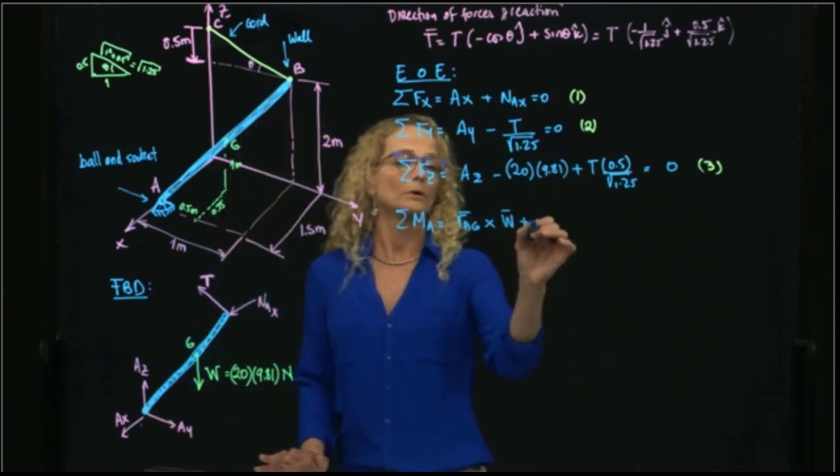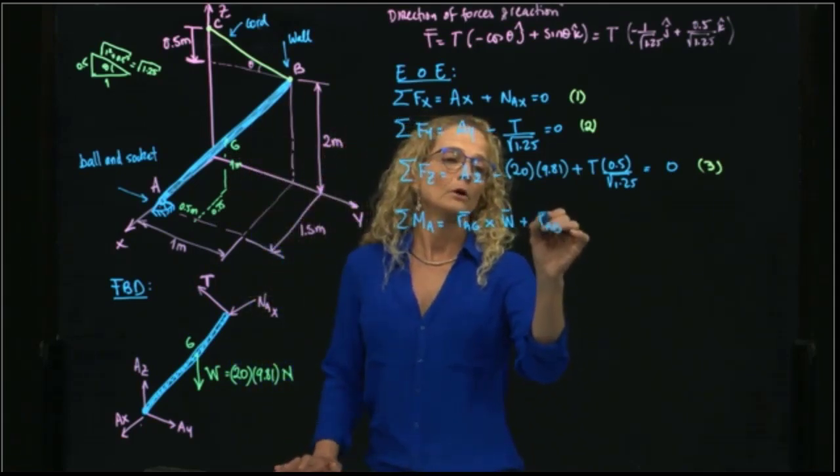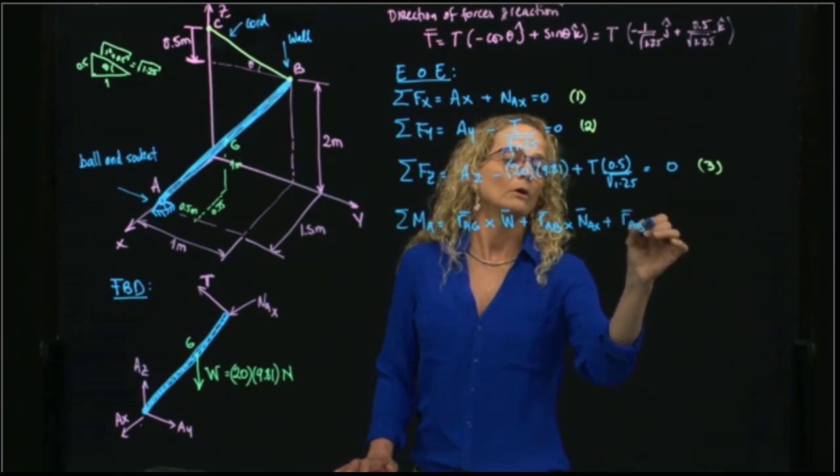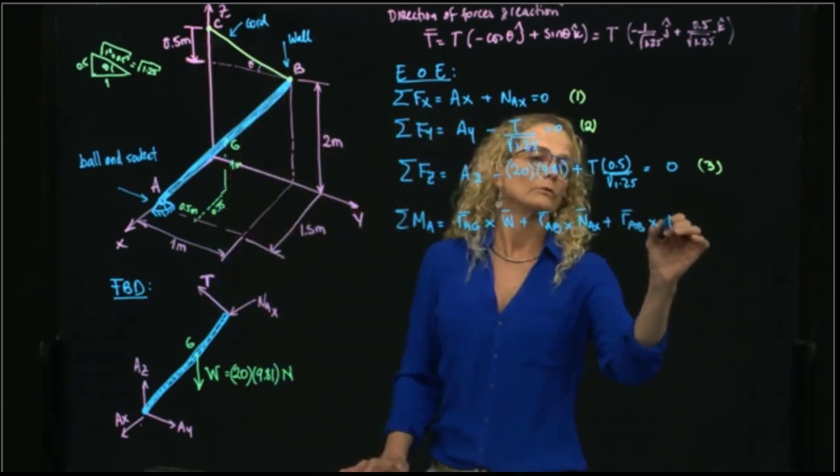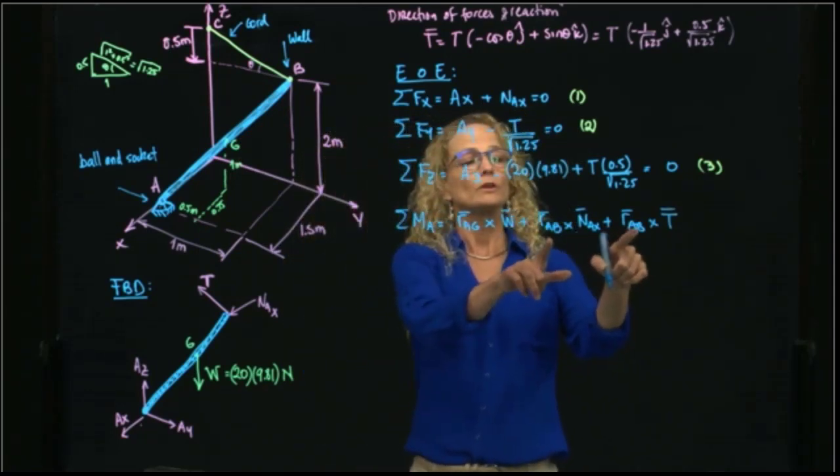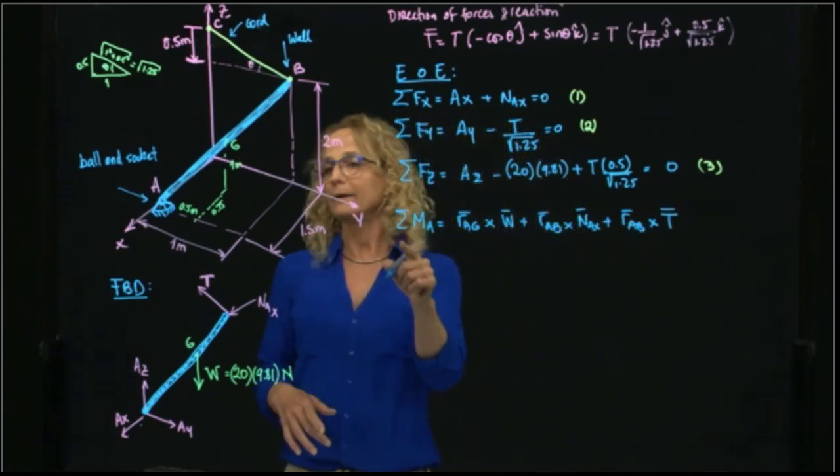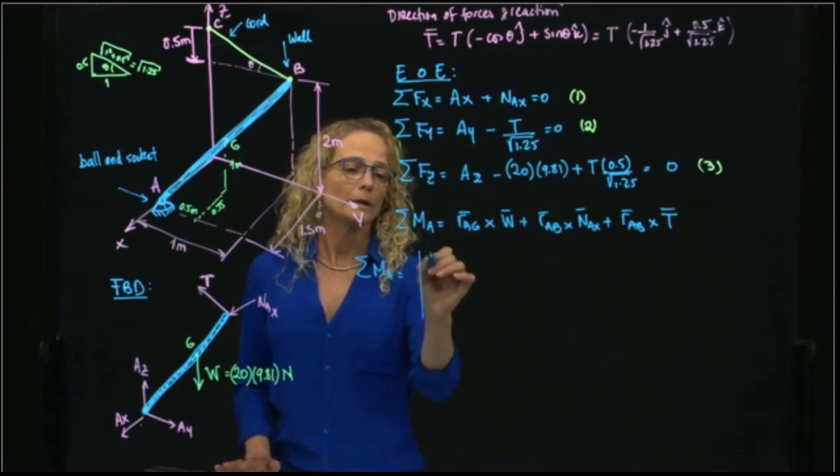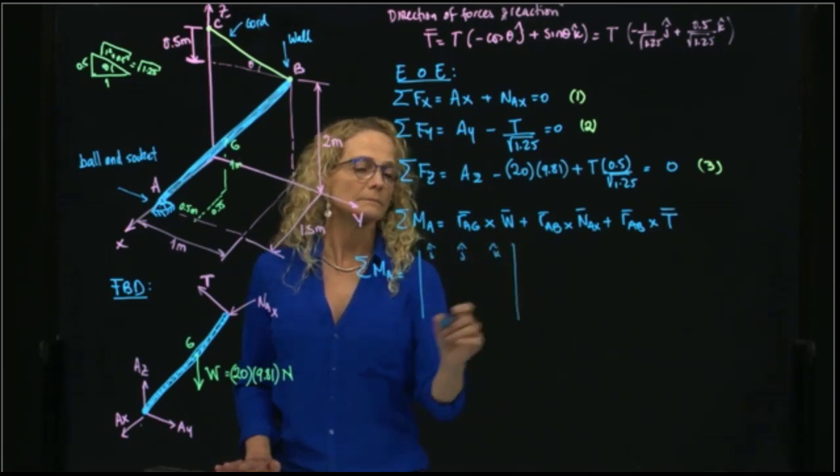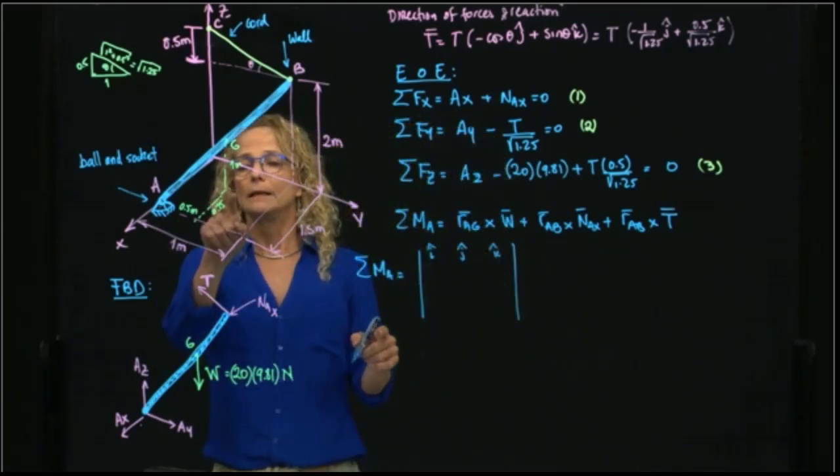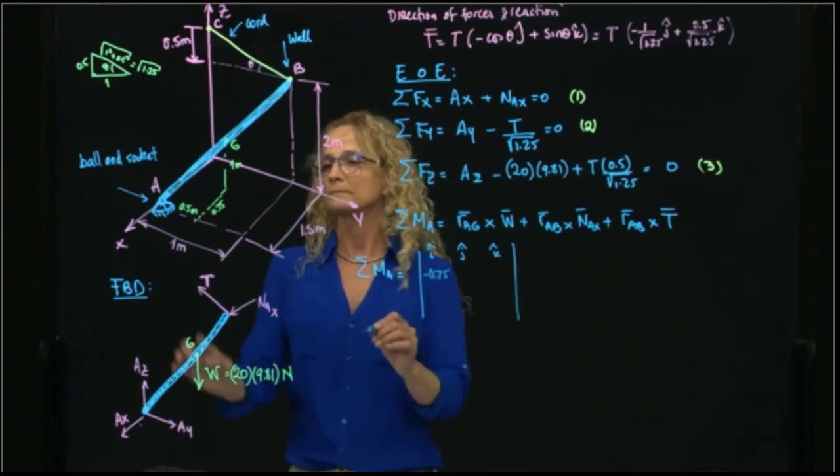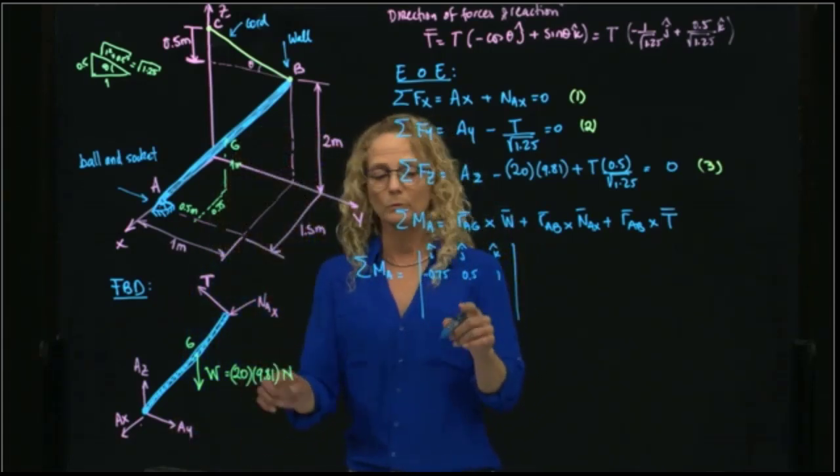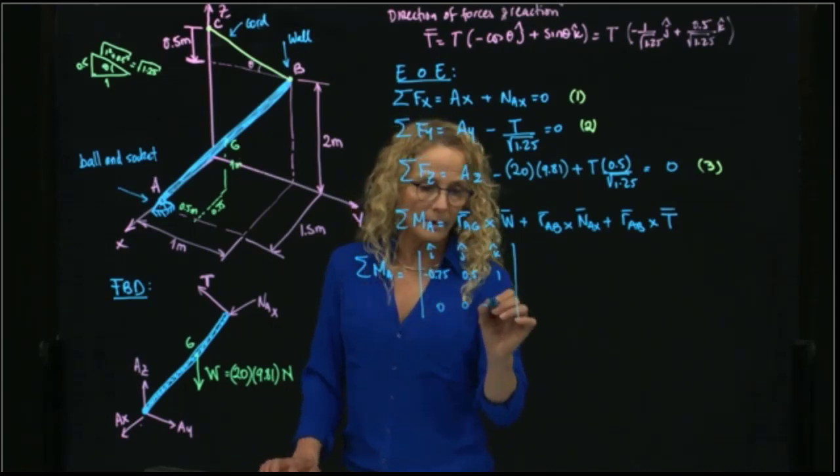I'm going to write AB, cross Nx, plus, also, AB, cross the tension. So I have those three that I have to produce. You see that those two are the same, so I can put them together. And nothing else. So let me continue calculating that moment. Let me move a little bit so that I can have enough space. So this one over here will be equals to I, J, K. This vector, we already say that this is, in X will be negative 0.75, in Y will be 0.5, and in K will be 1. And the weight is this multiplication right here, so it will be 0, 0, minus 196.2.